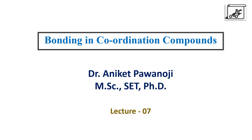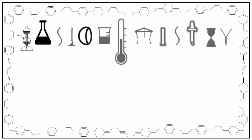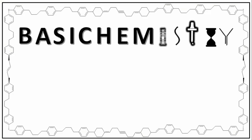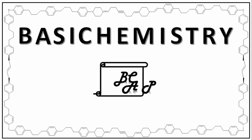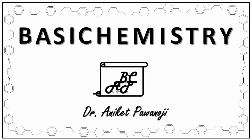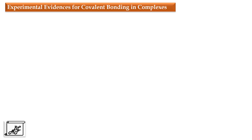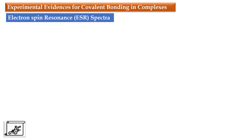In the last video towards the end, we have seen merits and demerits of crystal field theory. In that we have seen the bond between the metal and the ligand is covalent according to the molecular orbital theory. In this video we will see the experimental evidences for covalent bonding in complexes. There are many evidences, but in this specific video we will see two evidences. The first is electron spin resonance spectroscopy and the second is nephelauxetic effect.